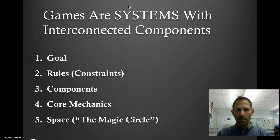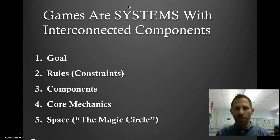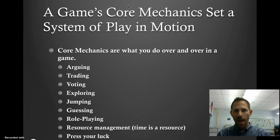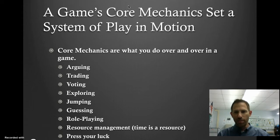Games are basically systems with interconnected components. You have a goal, rules, and components — which are pieces like dice, pawns, or dots on a screen. You have core mechanics and space, which is where the game is played — it could be a screen or a basketball court. Core mechanics set the system of play into motion; they could be trading, voting, or role play.